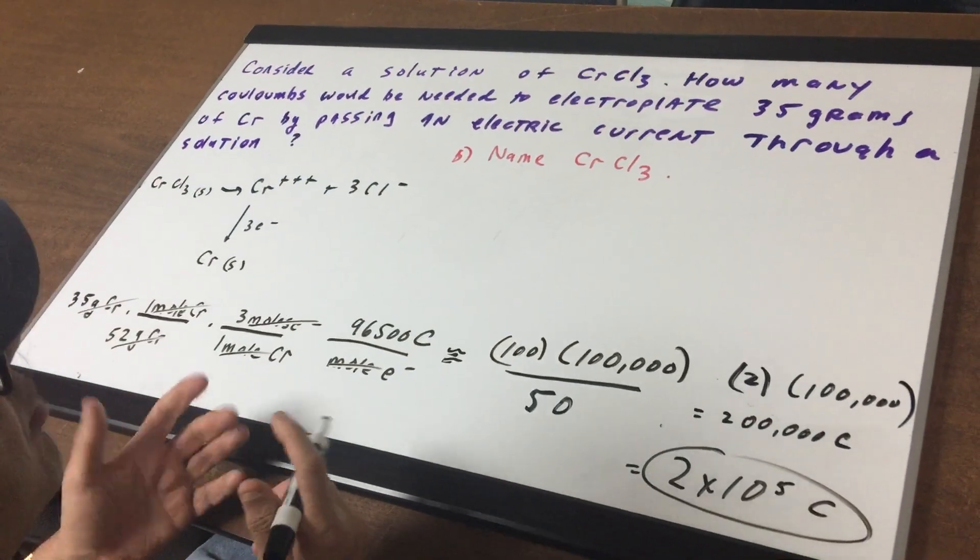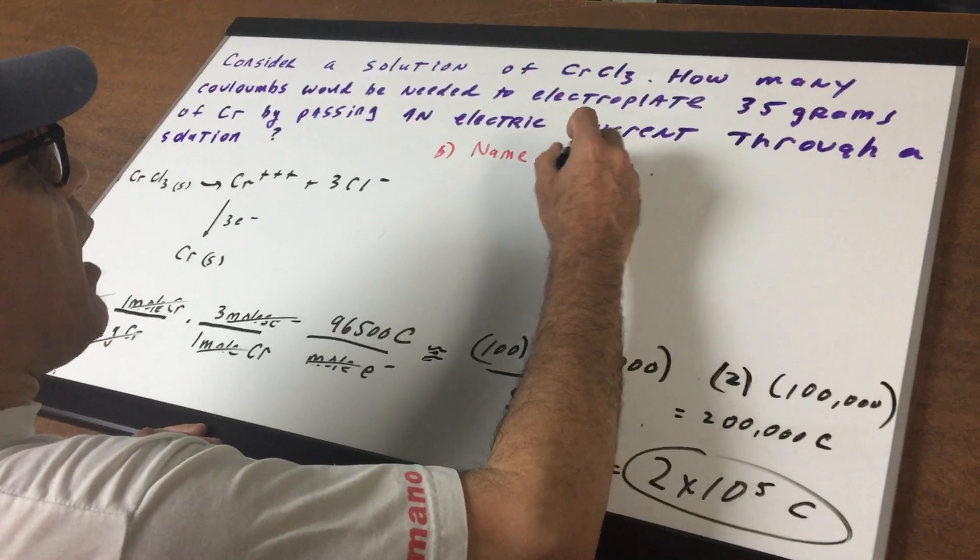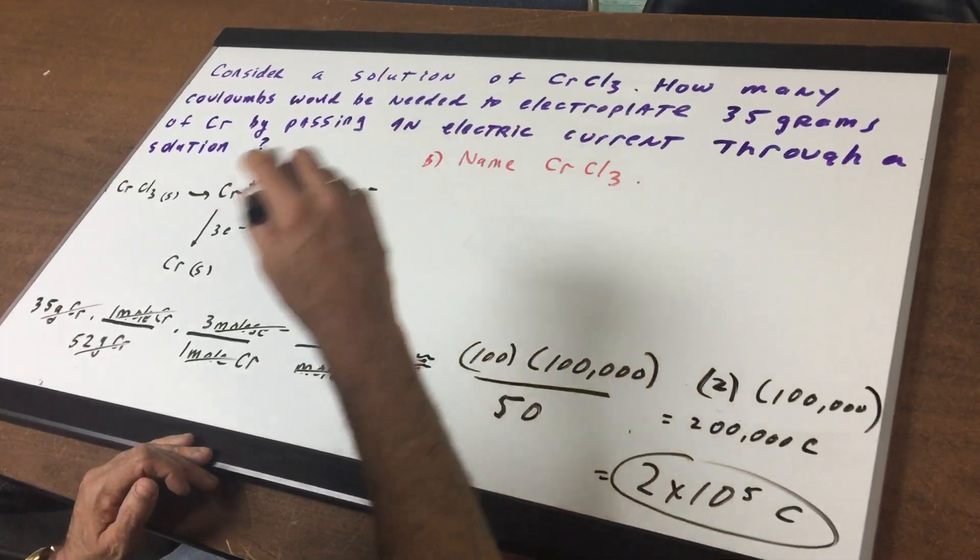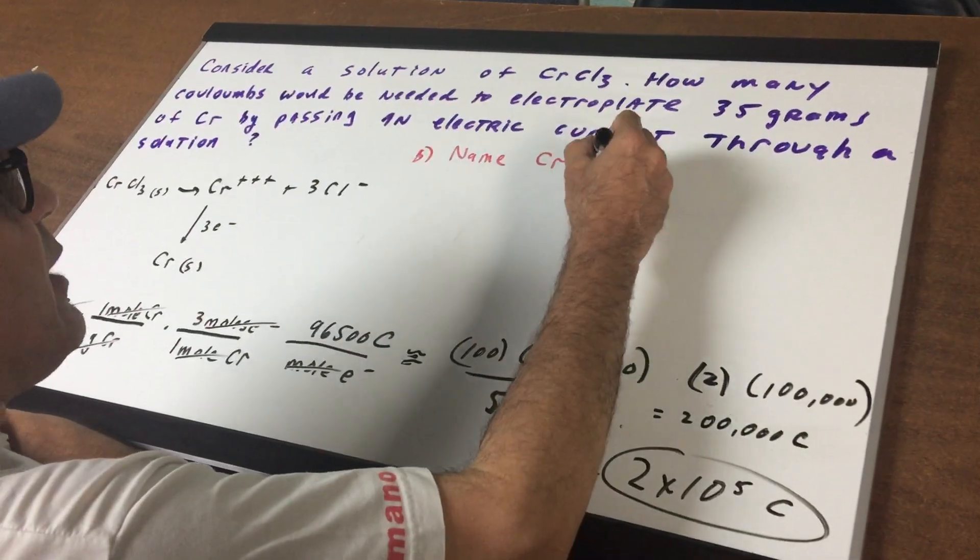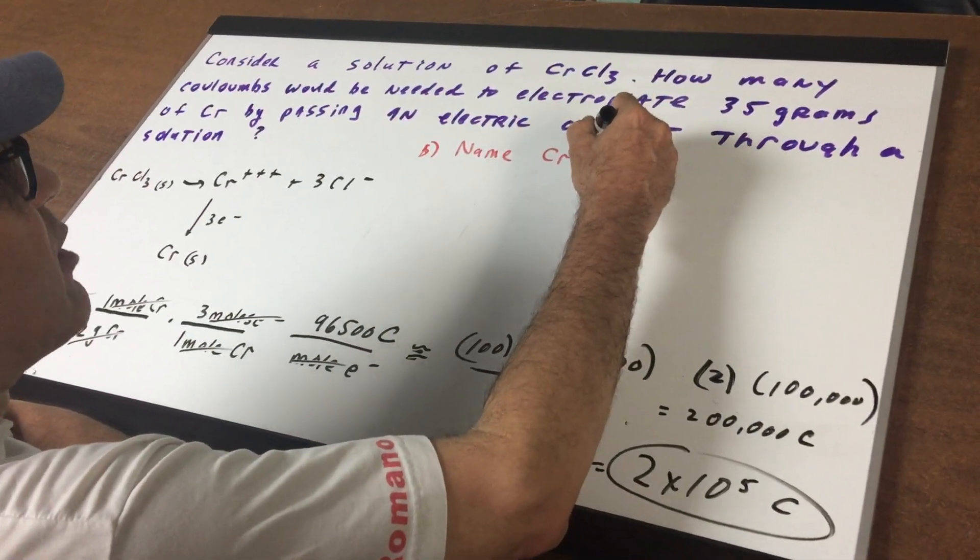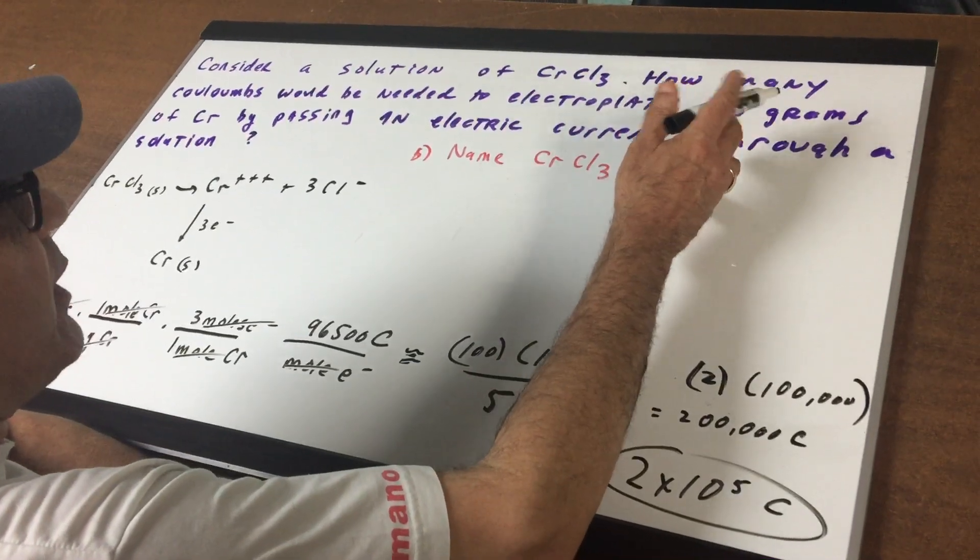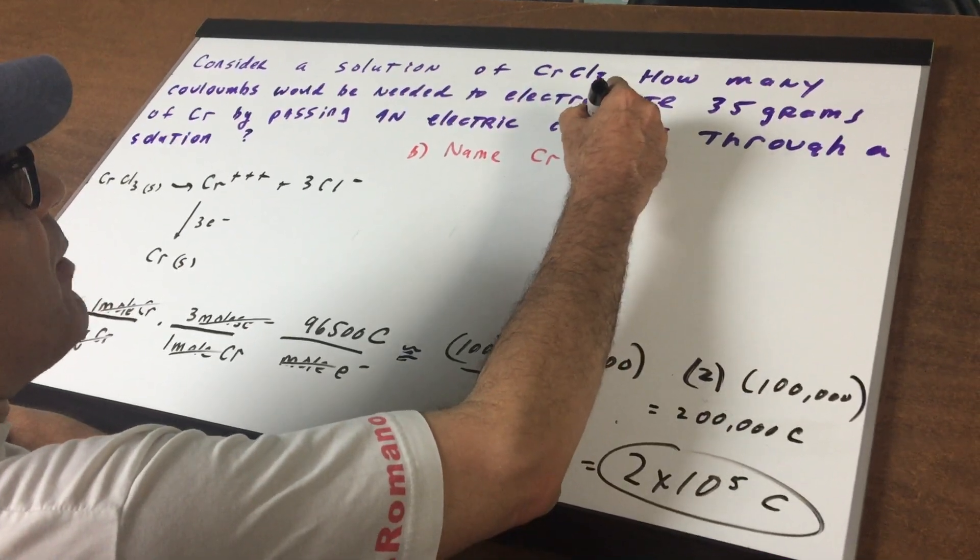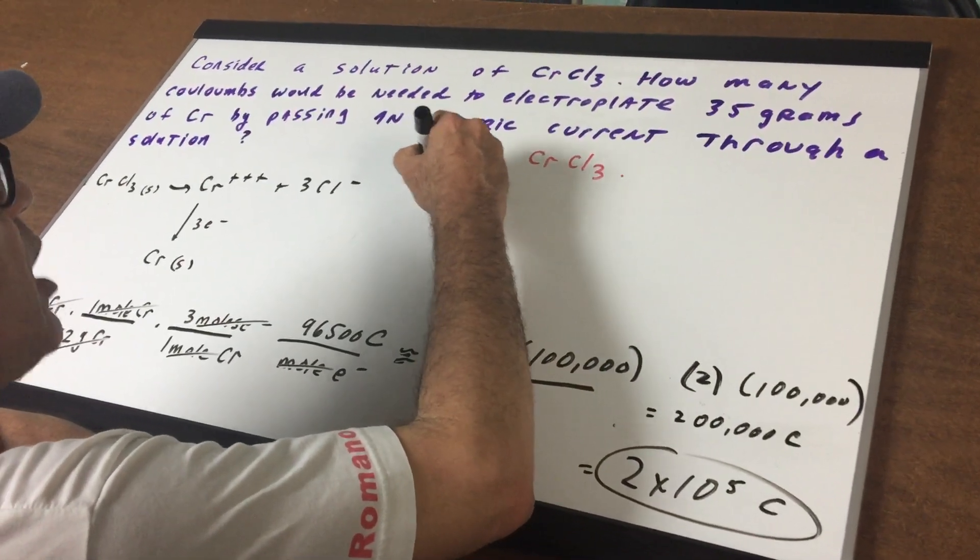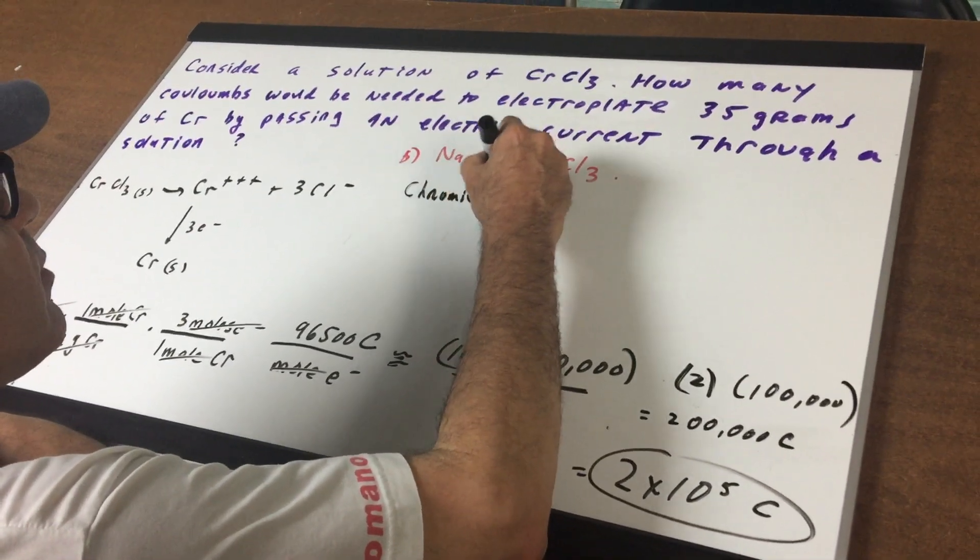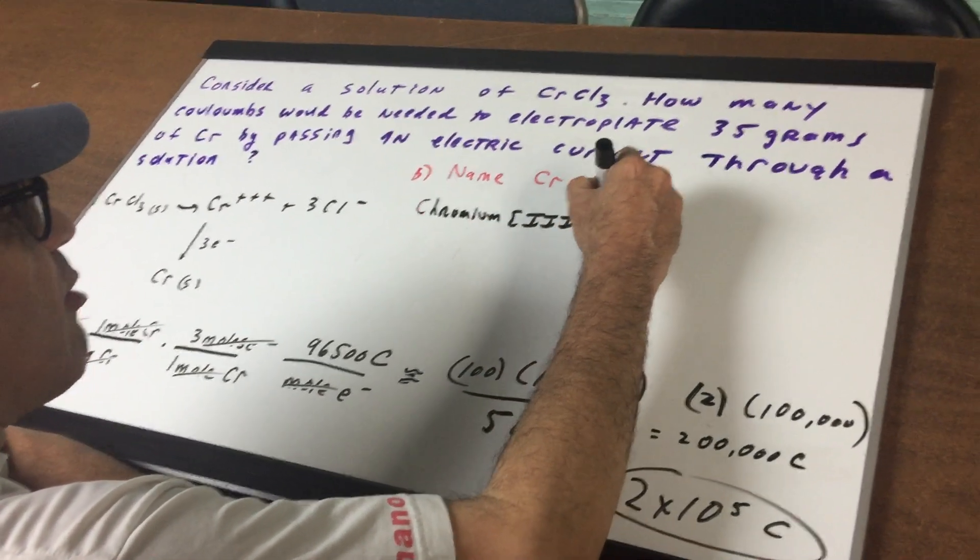Since chromium is a transition element, I'm going to use Roman numerals because it can have multiple oxidation states. Chromium can be plus 2, plus 3, plus 6. If you remember, chlorine has a minus 1 charge normally. So if there's three of them, that would put this at a minus 3, so this would be a plus 3. So we would get chromium III chloride.